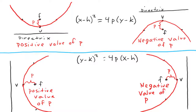P is the distance from the vertex to the focus. When P is positive, the focus is above the vertex or to the right. When P is negative, the focus is below the vertex or to the left. The directrix is always on the opposite side of the vertex from the focus.